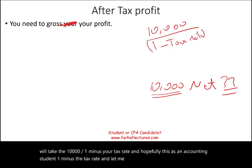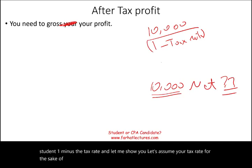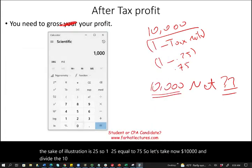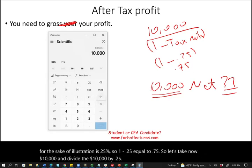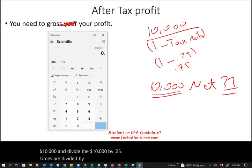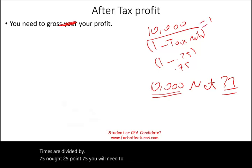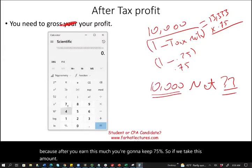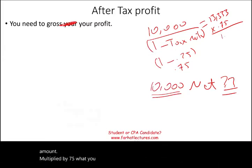Assume the tax rate is 25%. Then 1 minus 0.25 equals 0.75. Taking $10,000 divided by 0.75, you need to earn gross $13,333. Why? Because after earning that amount, you keep 75%. Multiplying $13,333 by 0.75 leaves you with $10,000 — meaning 25% goes to taxes.